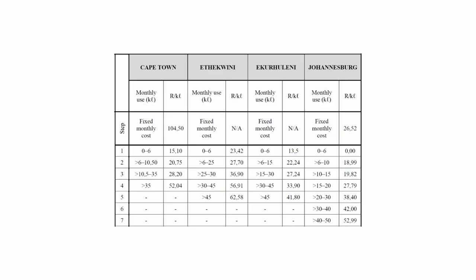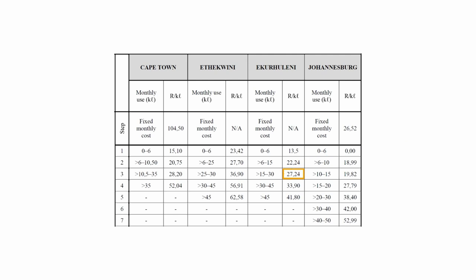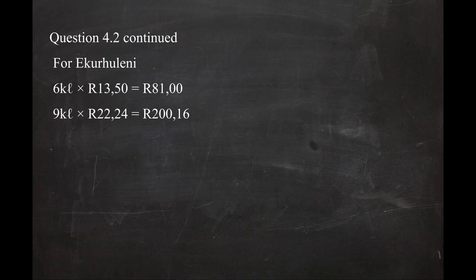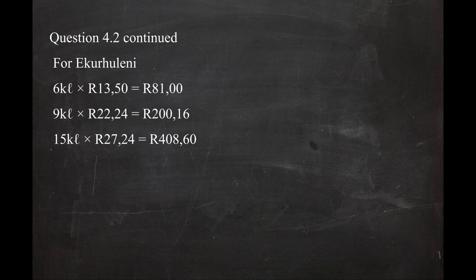In step three, the range is greater than 15 kilolitres to 30 kilolitres. The maximum amount chargeable is 30 − 15 = 15 kilolitres, at R27.24 per kilolitre. You must subtract 15 kilolitres already charged in steps one and two. The cost for step three is 15 kilolitres × R27.24 = R408.60.